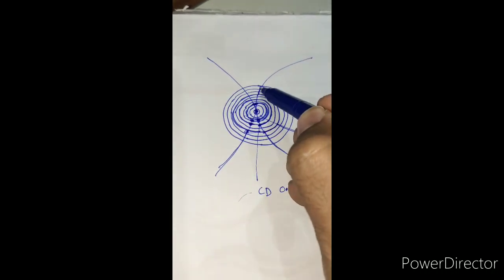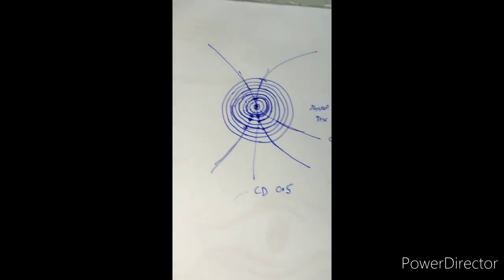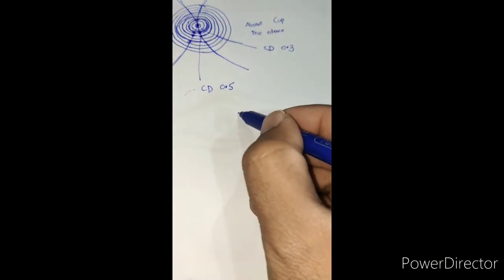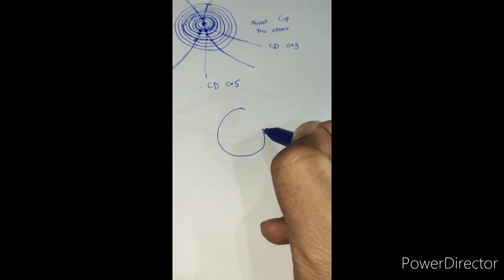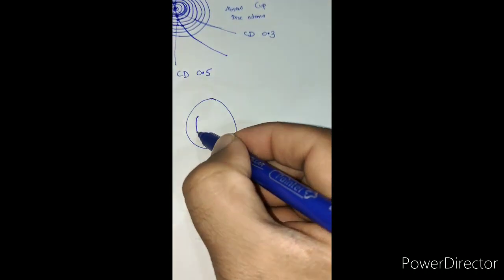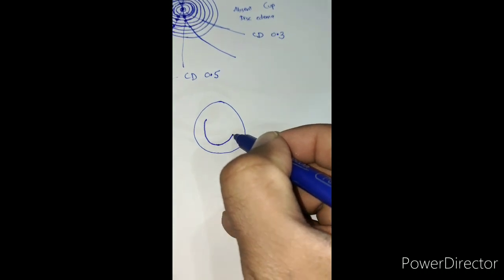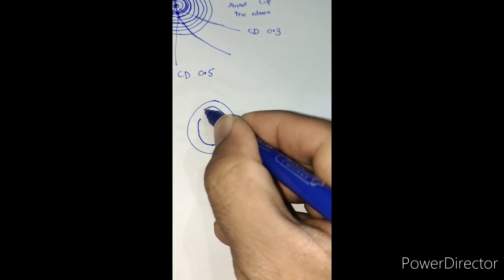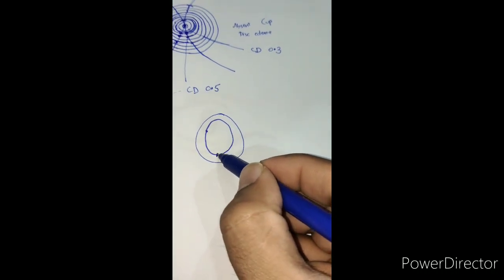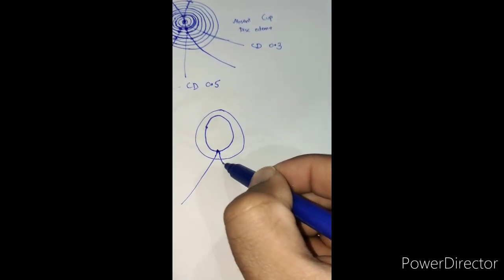So that's how you determine the cup-disc ratio and how to confirm. Sometimes the color will mislead you, but from where the vessels arise from the disc, that's the point from where you measure the cup.